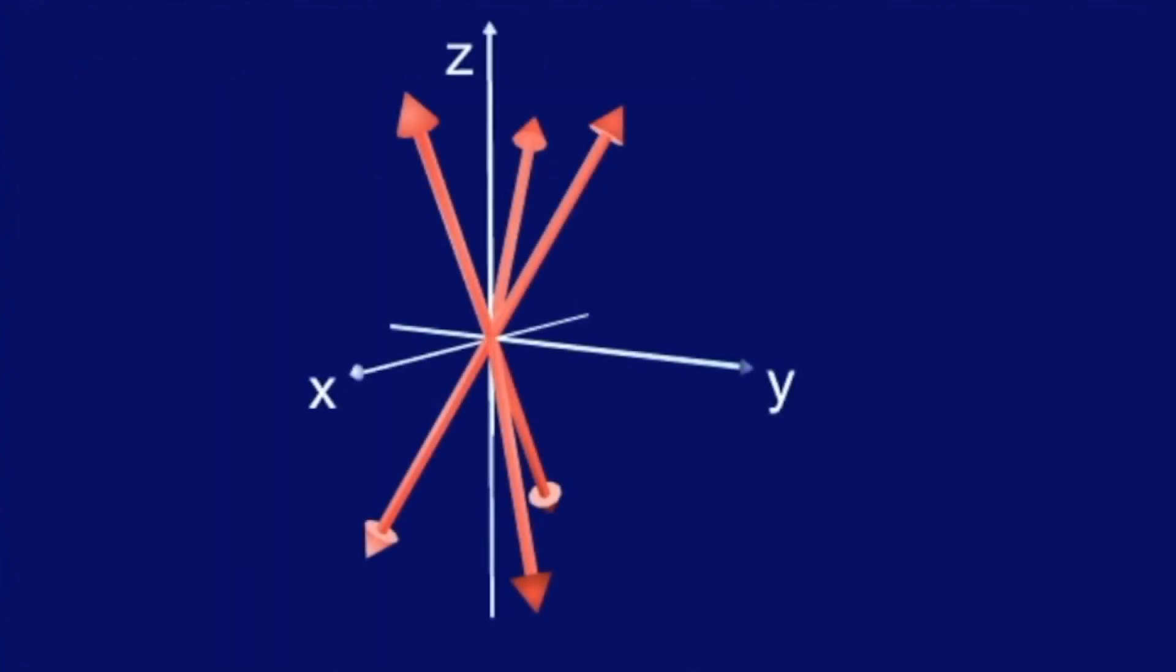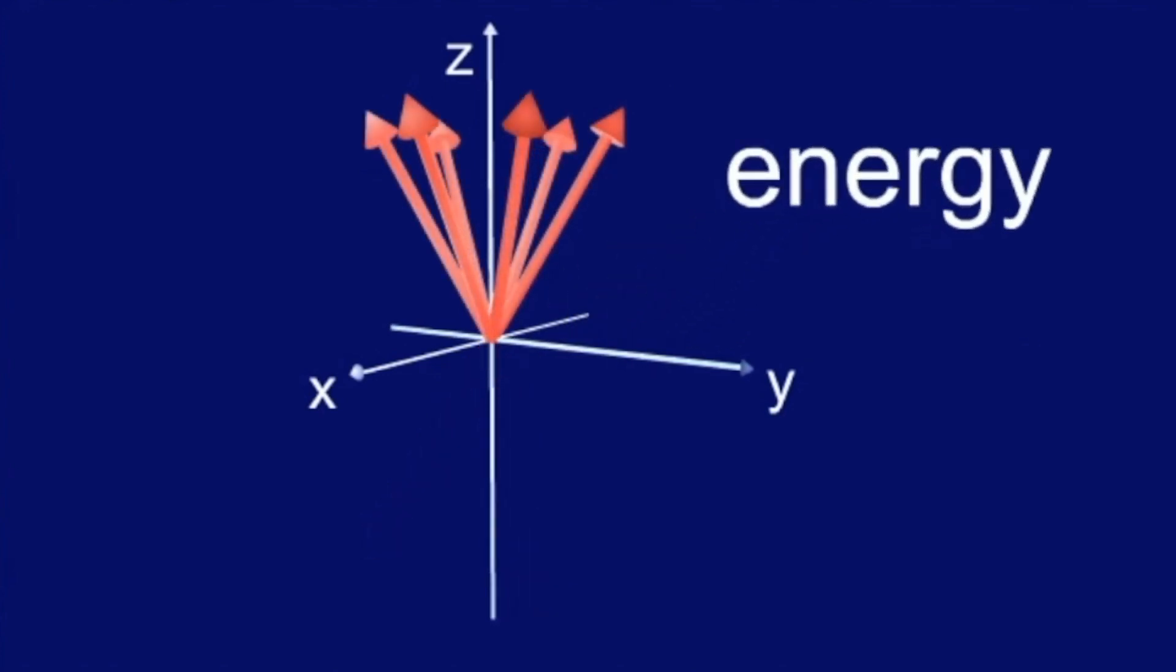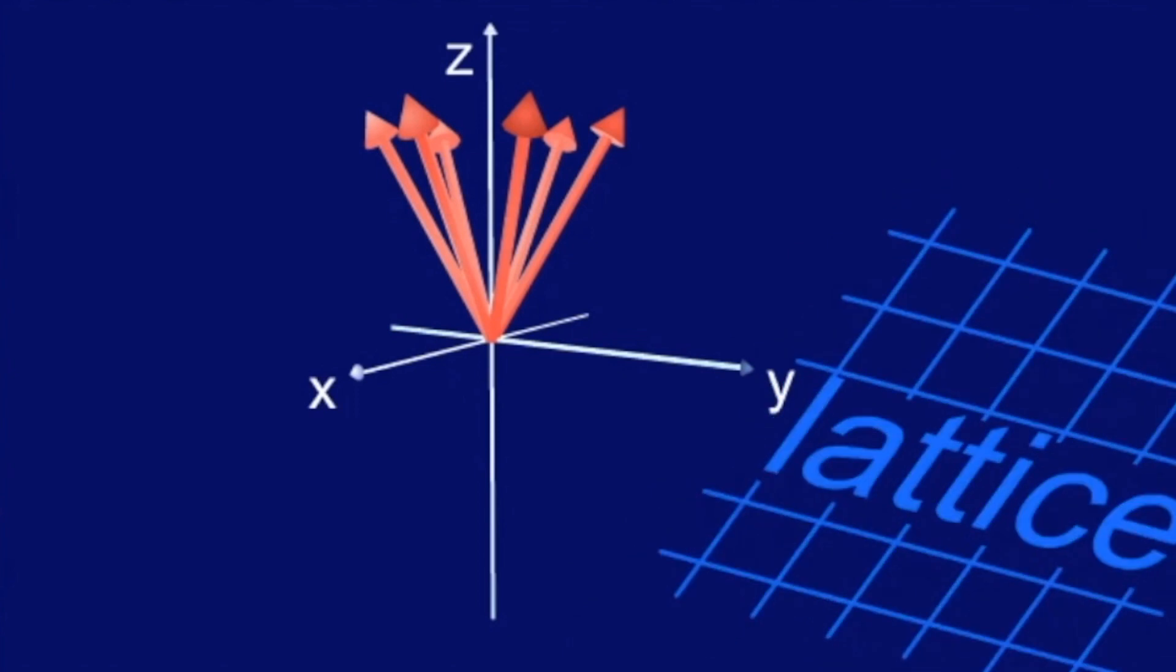As we have learned, T1 relaxation has something to do with the exchange of thermal energy, which is handed over from the protons to the surroundings, the lattice.